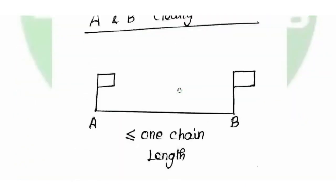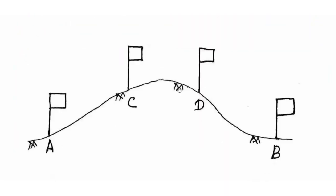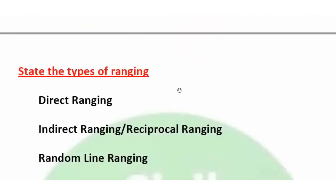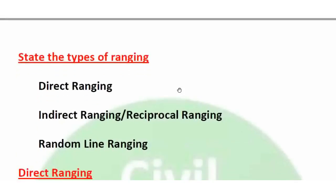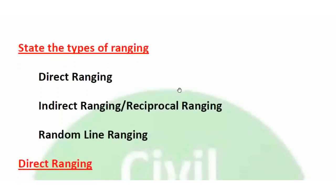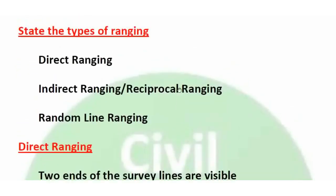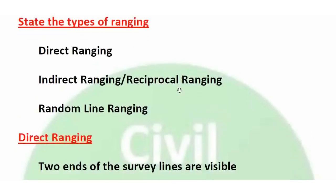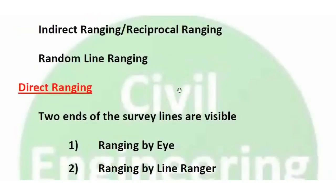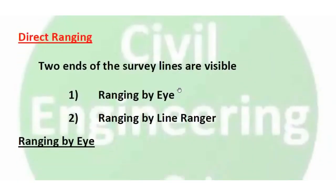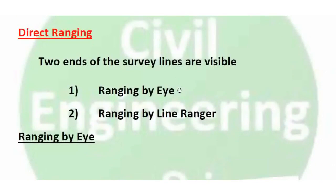The types of Ranging are: Direct Ranging, Indirect Ranging, Reciprocal Ranging, and Random Line Ranging. Direct Ranging means the two ends of the survey line are visible — the main survey stations are visible from the survey line.